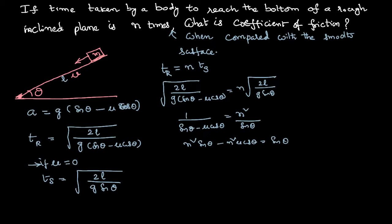By rearranging the terms again, n square sin theta minus sin theta equal to n square mu cos theta. Therefore sin theta of n square minus 1 equal to n square mu cos theta. Therefore, we can say mu is equal to tan theta of n square minus 1 by n square.